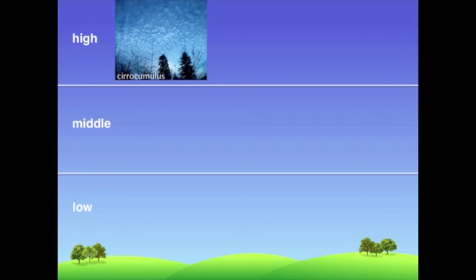Extend your arm towards the sky and compare the size of the puffs to your smallest finger. If the puffs of cloud are about the same size or smaller, then they're cirrocumulus.